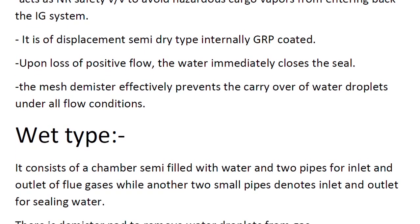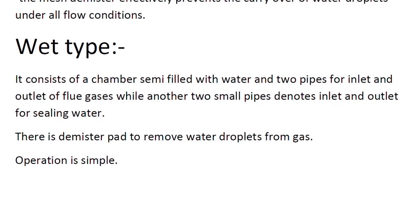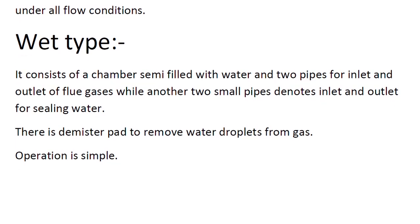Now we'll look at the wet type deck water seal. We also have a diagram showing the construction and functioning. Basically, it consists of a chamber filled with water and two pipes for inlet and outlet of flue gases, while another two small pipes denote inlet and outlet for sealing water.